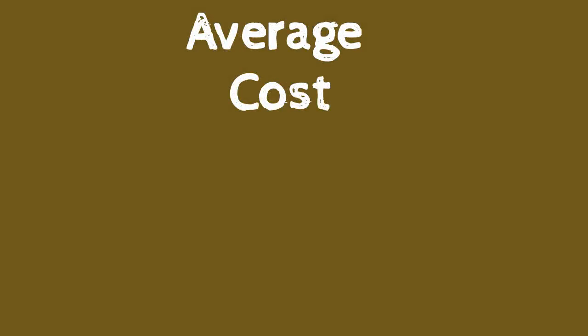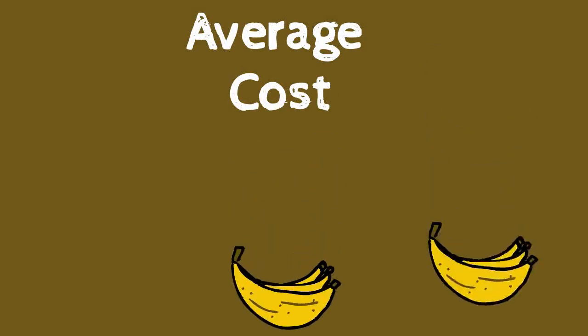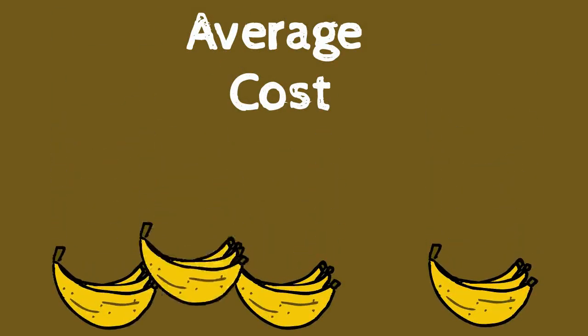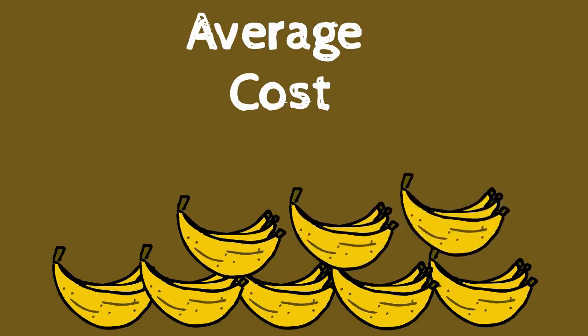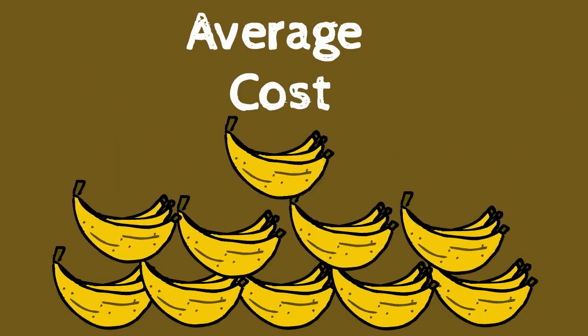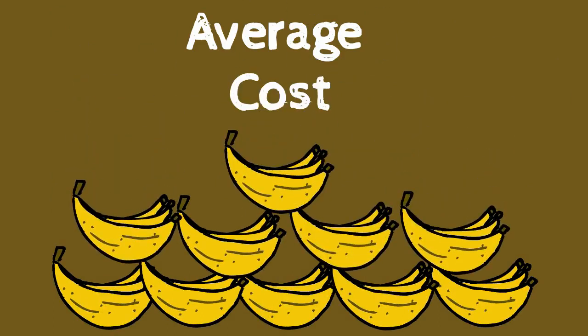The average cost method doesn't keep up with individual items or the assumed order of sales. Rather, this method calculates an average cost of the inventory and uses that average each time inventory is sold.